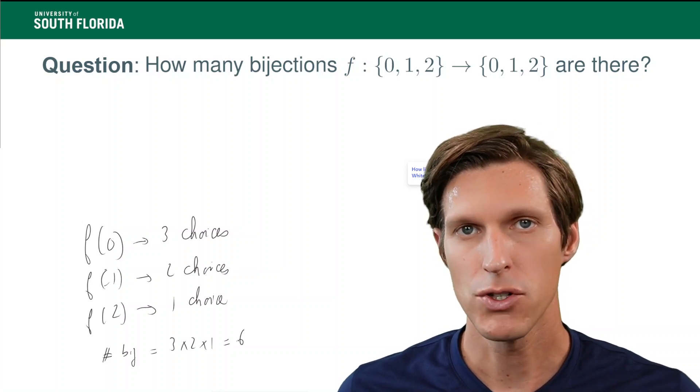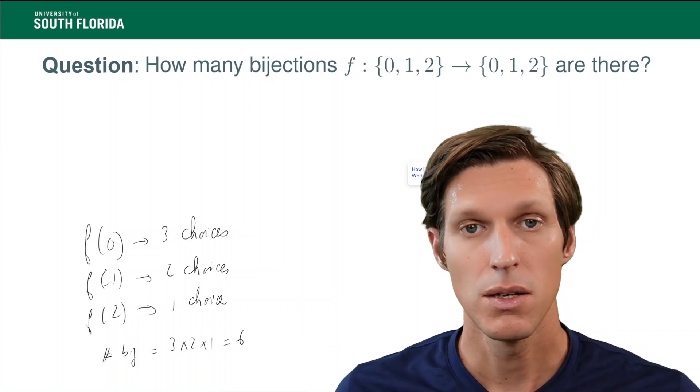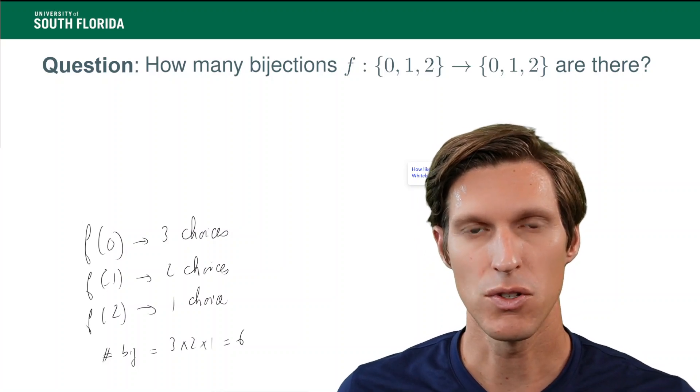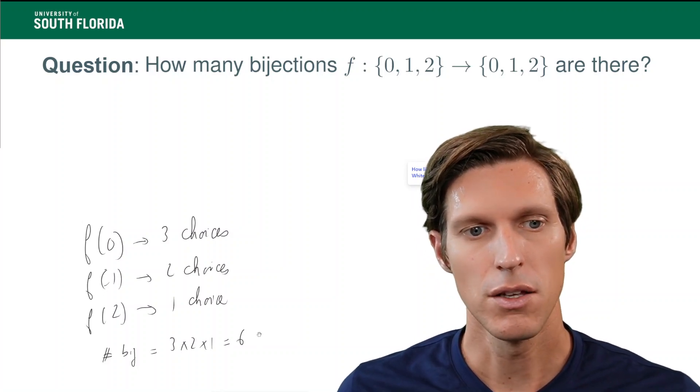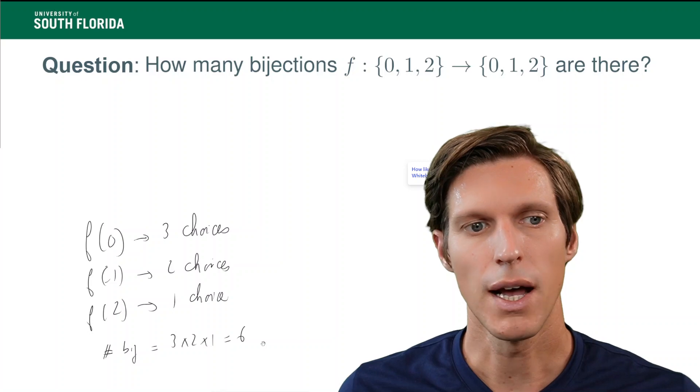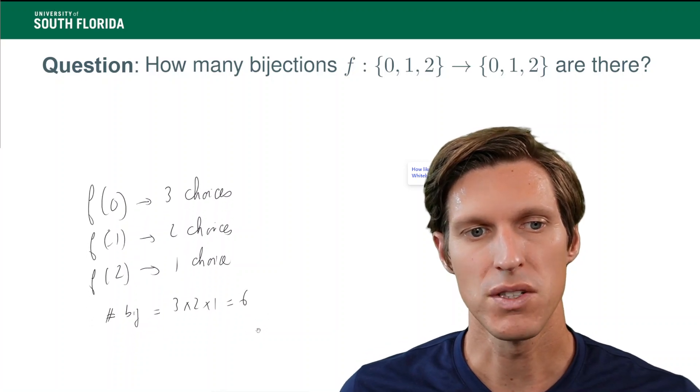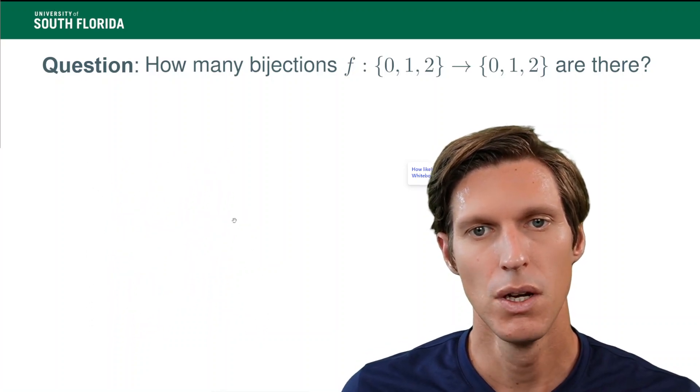So, if your pseudo-random function is a bijection by design, which it will have to be for the cryptographic applications to block ciphers, then for sure you're going to have much fewer possibilities. All right.